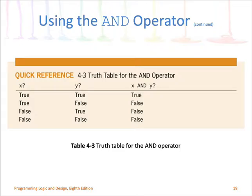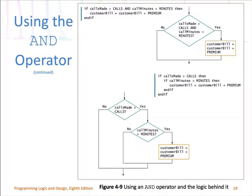So that is the truth table for the AND operator. They have combined the two decision points into one: if calls made is greater than calls AND call minutes is greater than minutes, then add the premium to the bill. Otherwise there is no else clause — do nothing. When you say 'do nothing,' that means you have a null statement or null block of code.